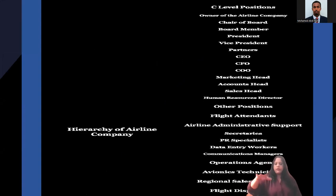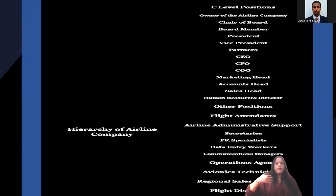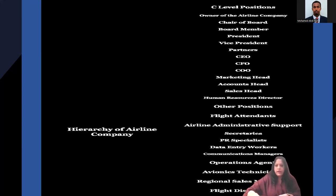The C-level positions represent the hierarchy of the airline company's top-level management. It could be the owner of the airline — either a private company if privatized, or a government company if it is a government carrier. Then there is the chair of the board, board members, president, vice president, the CEO, the CFO (chief financial officer), the COO, and the chief legal officer. Then there is the marketing head and other departments like marketing and sales. Other positions include flight attendants, pilots, co-pilots, public relations officers, administrative staff, aviation technicians, and security personnel.